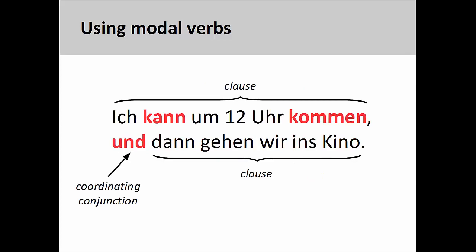Or, as you see here, at the end of a clause: ich kann um zwölf Uhr kommen und dann gehen wir ins Kino — I can come at twelve o'clock and then we'll go to the movies. We will examine coordinating conjunctions and clauses in a later presentation.